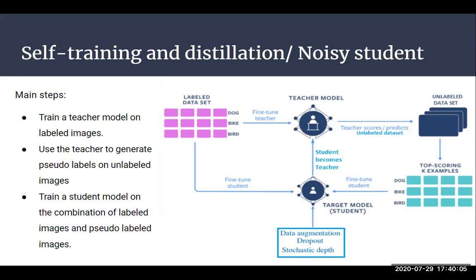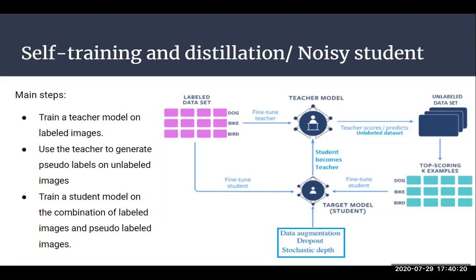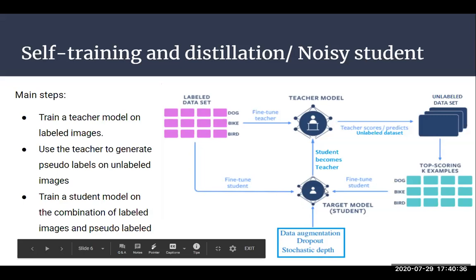The noisy student approach is an extension of that classical method. What they have done is first introduce noise to the student model — three types: data augmentation, dropout, and stochastic depth. Second, they make the student model larger than or equal to the teacher model, whereas in the classical self-training method the student model is always smaller than or equal to the teacher model. That is the key difference between the classical self-training distillation method and the noisy student method.